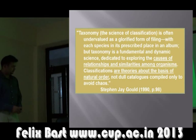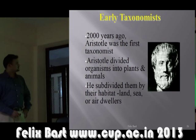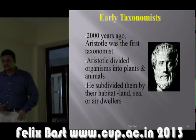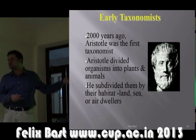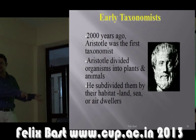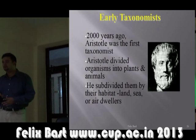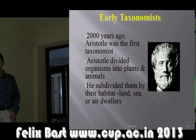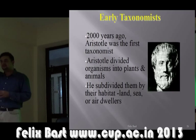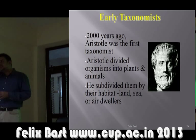Aristotle, the famous Greek philosopher, divided organisms into plants and animals almost 2,000 years ago — though Indian Vedic texts also discussed plants and animals. He further subdivided them by habitat: land, sea, or air dwellers. One could think about air-dwelling organisms — for example, spores of plants are in the atmosphere.